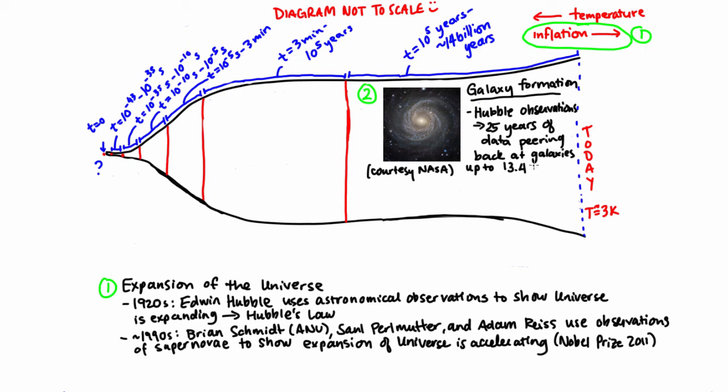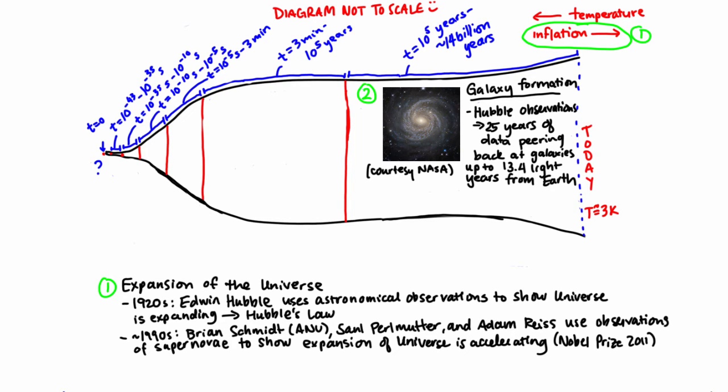So effectively, these researchers are looking at a galaxy as it was, not too long after the start of the universe, and by looking at galaxies at various stages of their life cycle and various distances from Earth, they're able to actually get a pretty good picture of how galaxies are formed.